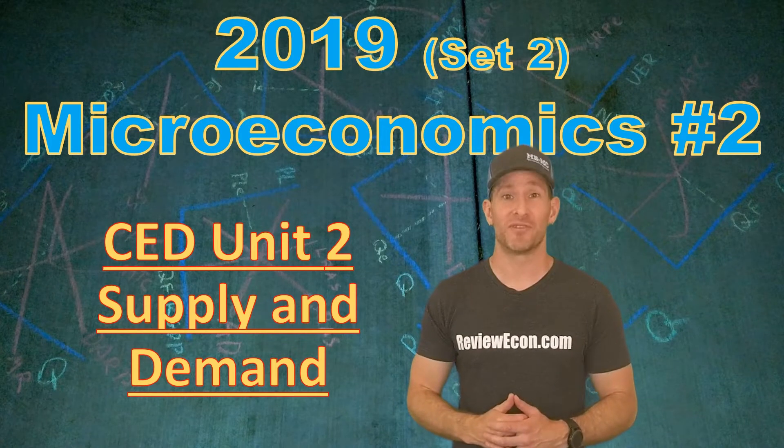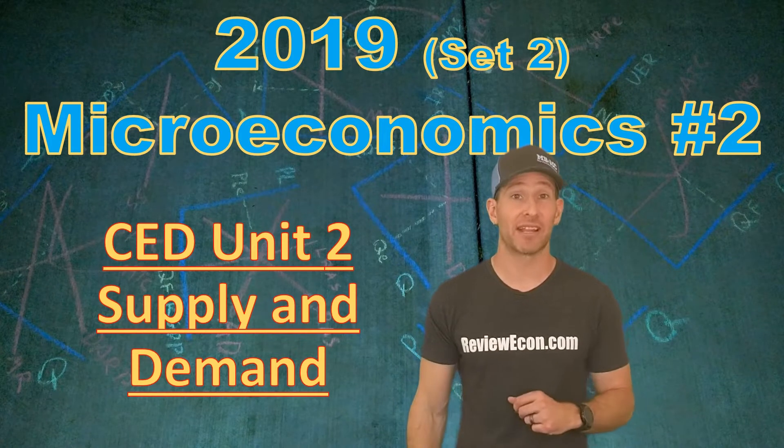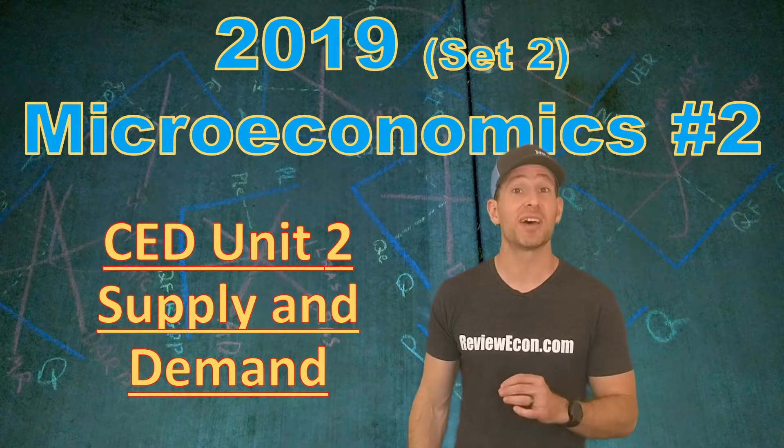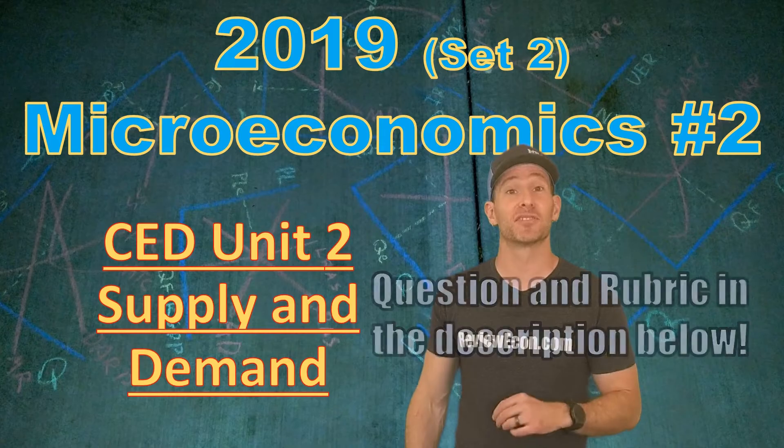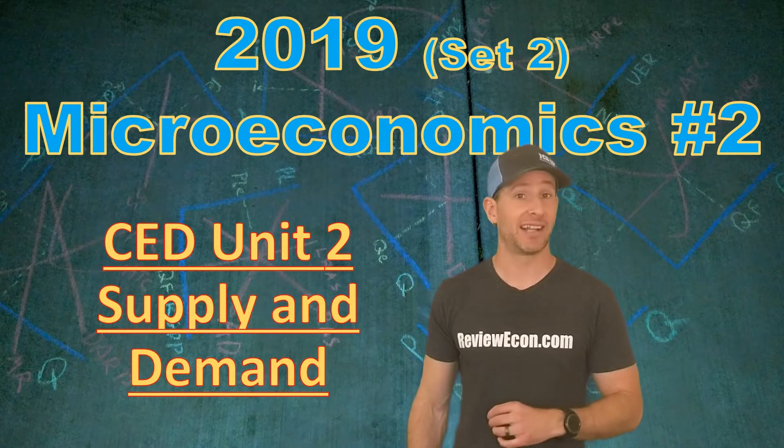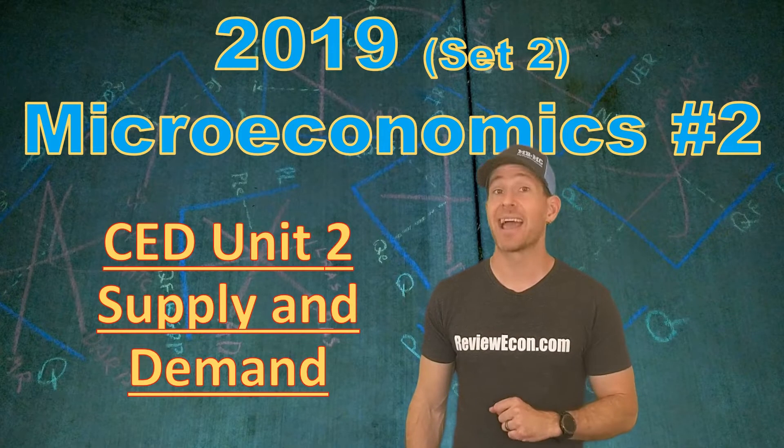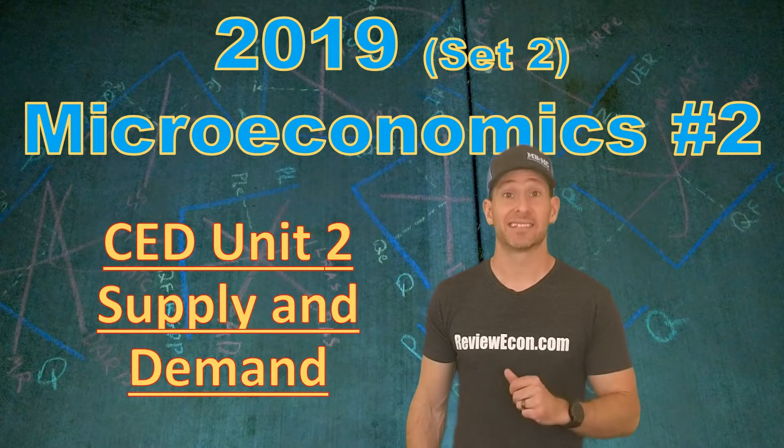Hi everybody, Jacob Reed here from ReviewEcon.com. Today we're going to be looking at the microeconomic exam for 2019, set two. This is question number two, and it covers the course exam description for unit two, supply and demand. This one is all about excise taxes. Let's get into the question.